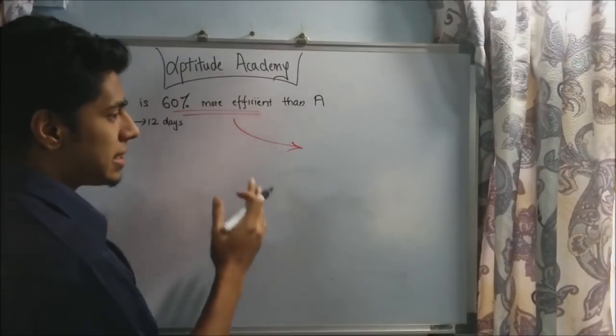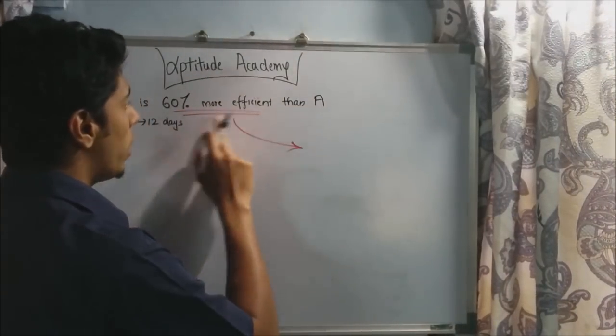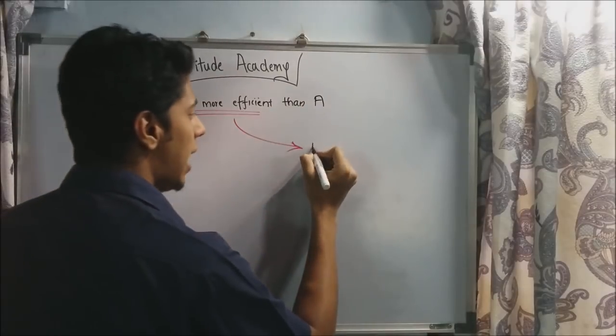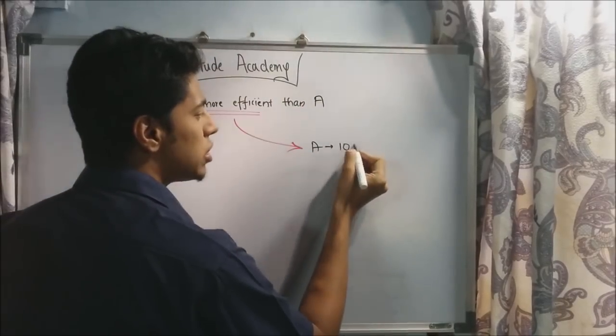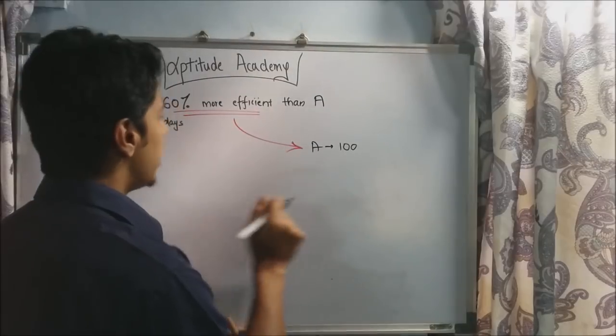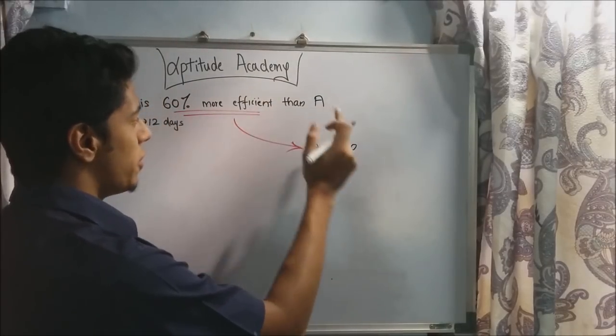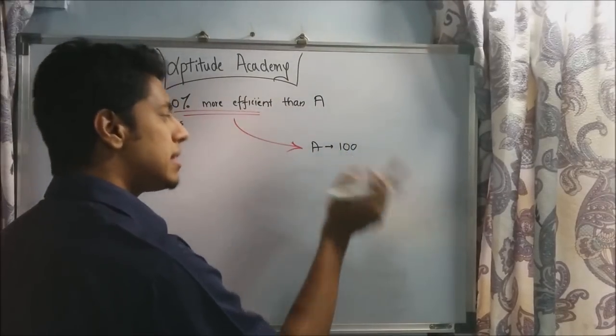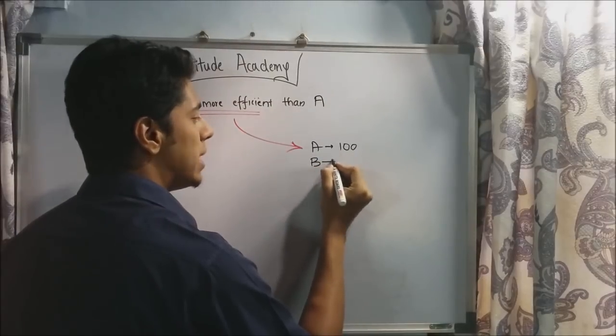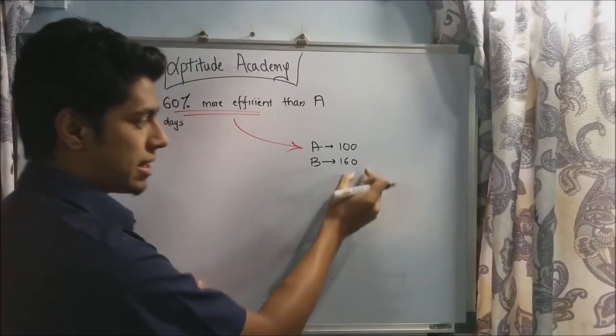Whenever it is in percentages, let us assign one of them as 100. We are comparing it with A. Let's say A is 100. B is 60% more efficient, so 60% of 100 plus the initial. So B will be 160, 60 plus 100.